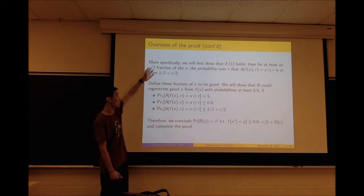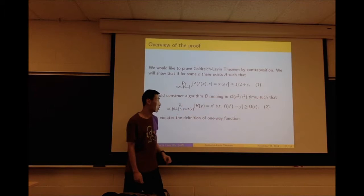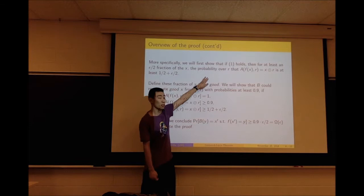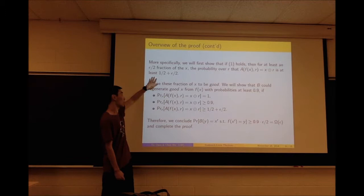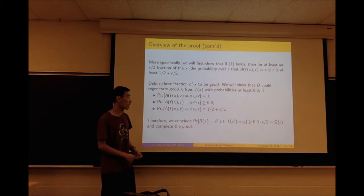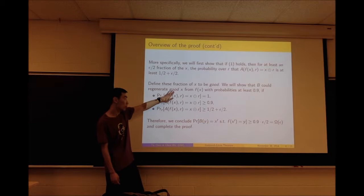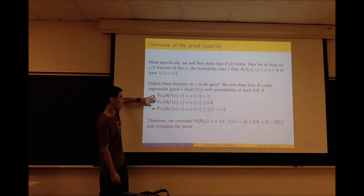More specifically, we will first show that if our assumption holds, then there is at least an ε/2 fraction of x such that the probability over r that A(f(x), r) equals x dot r is at least 1/2 plus ε/2. We define this fraction of x to be good. We will show that our algorithm B can recover those good x from f(x) with probability at least 0.9.